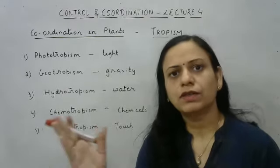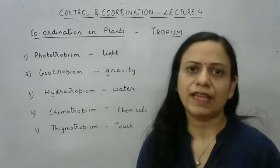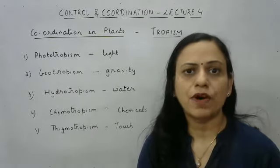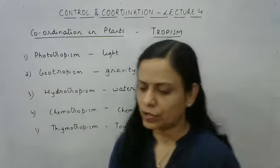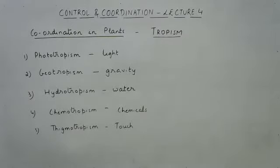Since the plant is going towards the stimulus, we can say this is an example of positive phototropism. Positive phototropism means when the part of the plant is growing towards the light. If we observe that some part of a plant is going away from light, then we call it negative phototropism. Positive means growth towards the stimulus and negative means growth away from the stimulus.